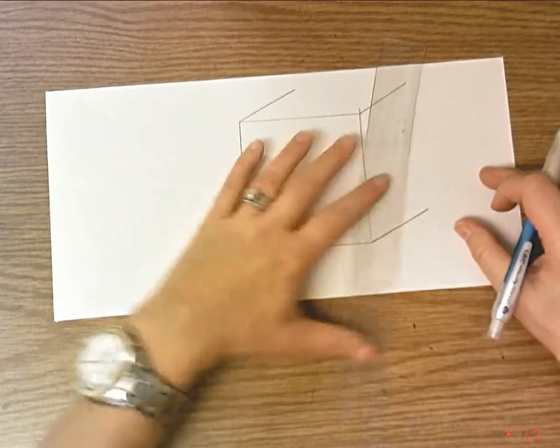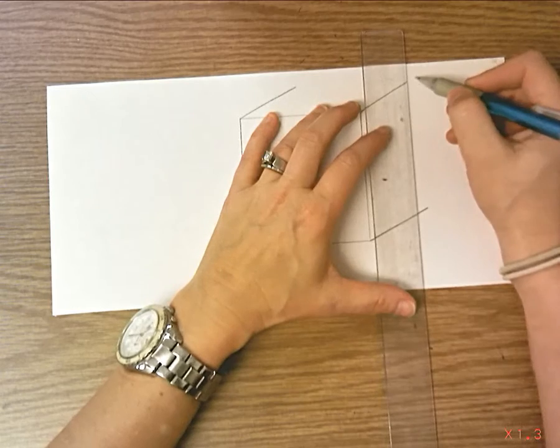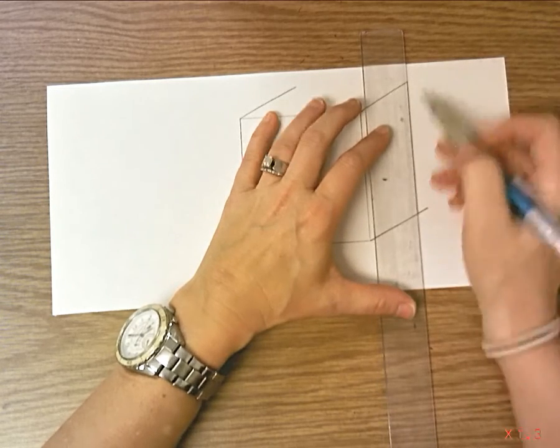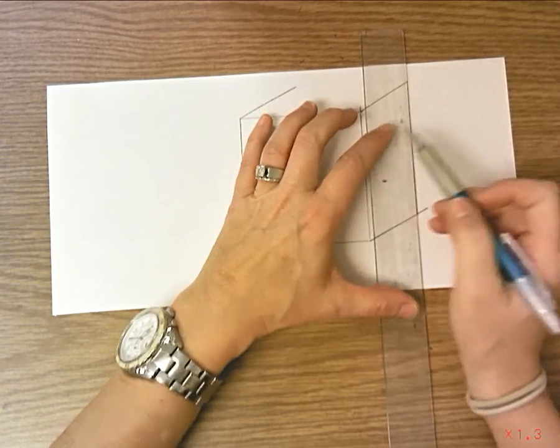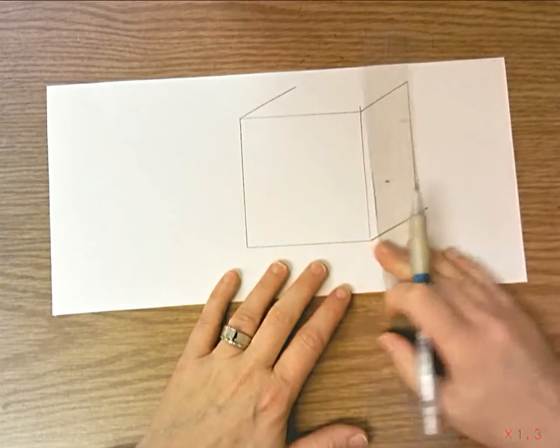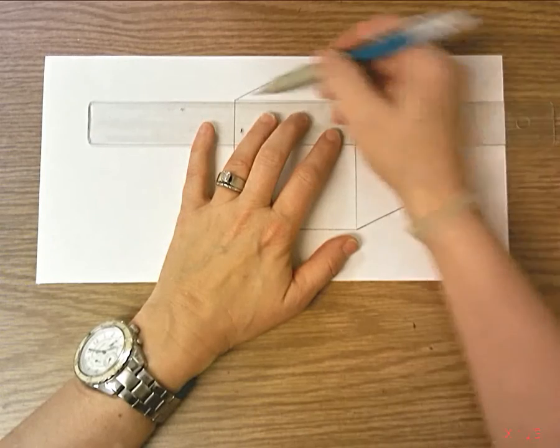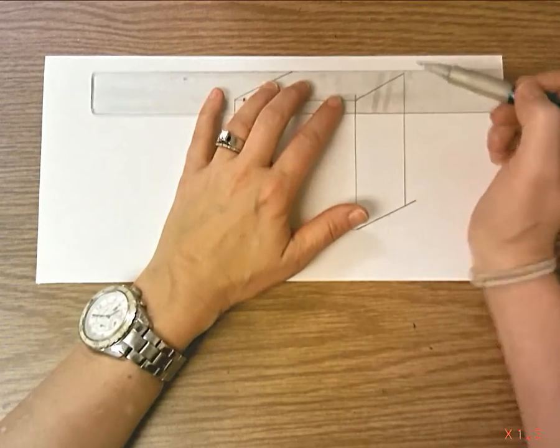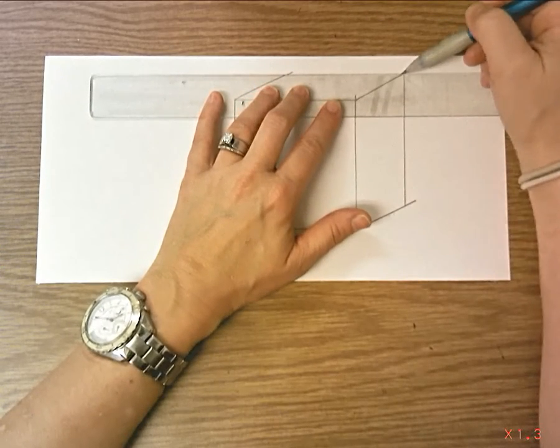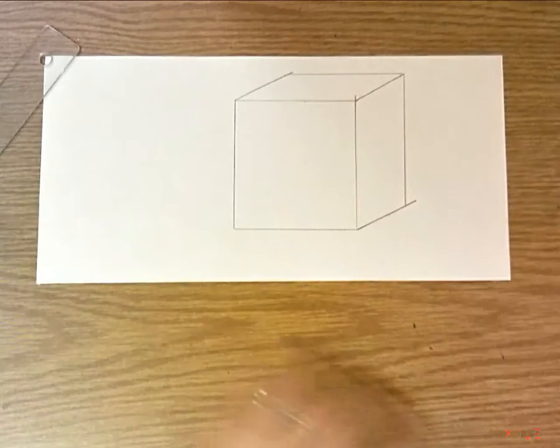And then you close the ends of them off with another straight line. And you want to make sure that this line is parallel to this line, that you don't make it angled, that it's straight up and down and lines up with that. And then with the line going across the same, you want it to be parallel to the top of the first, the square that you drew.